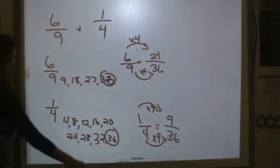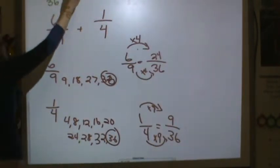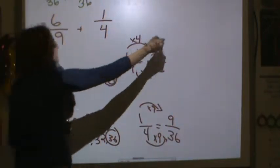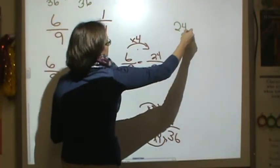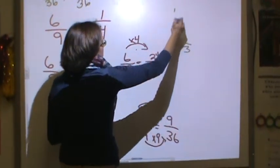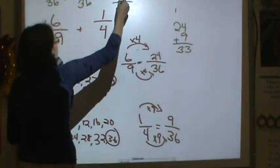Now I can add these because we have common denominators. So I have twenty-four thirty-sixths plus nine thirty-sixths. I'm going to do this off to the side because I don't know twenty-four plus nine off the top of my head. Four and nine is thirteen. So I have thirty-three thirty-sixths.